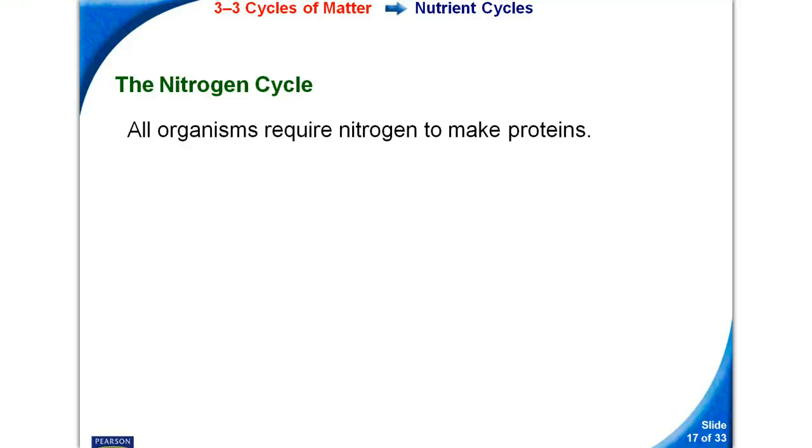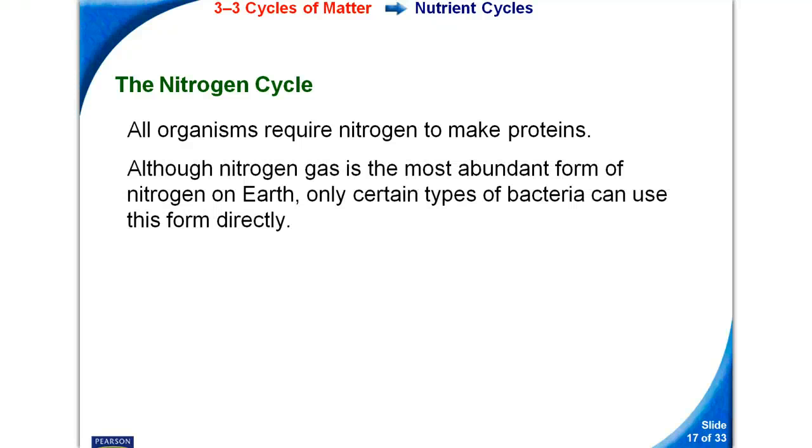The nitrogen cycle. All organisms require nitrogen to make proteins. Although nitrogen gas is the most abundant form of nitrogen on Earth, only certain types of bacteria can use this form directly.